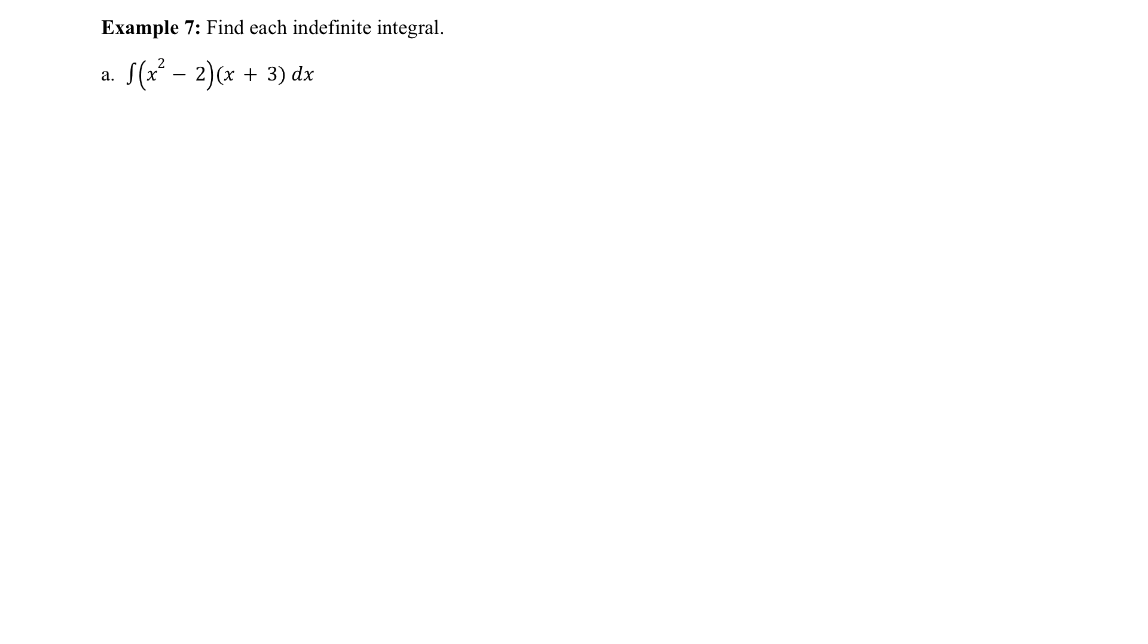We're just going to go ahead and simplify what's inside of the integral in this problem. In this case it's not too bad. We can just foil this out. So I would integrate x² times x, which gives me x³, plus x² times 3 would be 3x², minus 2 times x would be -2x, and -2 times 3 would be -6 dx.